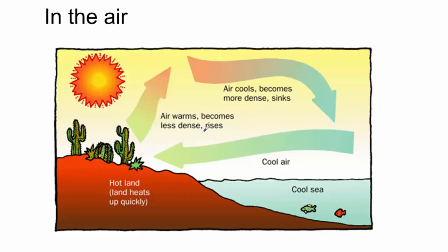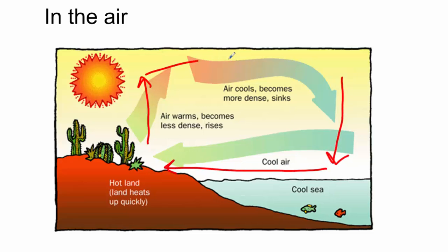We can see convection currents in the air, for instance over the land and water. The land heats up very quickly during the day while the water is still a little cool, so you have the air rising over the land and falling over the water, making a convection current. We actually call this one a sea breeze — that is why the wind is always at your face when you go to the beach during the day.